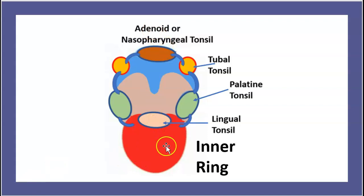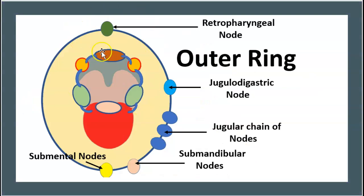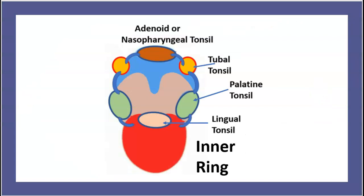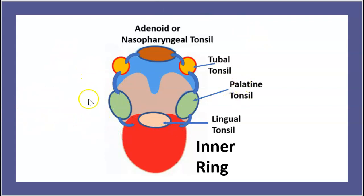Another thing to notice: the tonsils are located in the inner ring, while the nodes are situated in the outer ring. And as we covered at the beginning, this system produces B and T lymphocytes — that's a key thing to remember — and it serves as the main local barrier to protect against food and air passage.